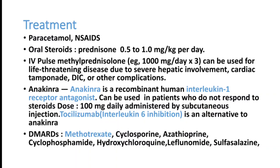Treatment follows the approach for immune-mediated disease. Steroids or steroid-sparing agents may be helpful. When a patient presents with fever, rashes, and joint pain, paracetamol can be tried first, followed by NSAIDs if there is no renal failure. If the patient is not improving, steroids can be started — prednisolone at 1 mg/kg body weight as the initial dose, stepping down slowly over weeks. For very sick ICU patients, pulse methylprednisolone 1 gram IV for three consecutive days can be given, followed by oral prednisolone 1–2 mg/kg. Indications for pulse therapy include life-threatening disease due to severe hepatic involvement, cardiac tamponade, or DIC.